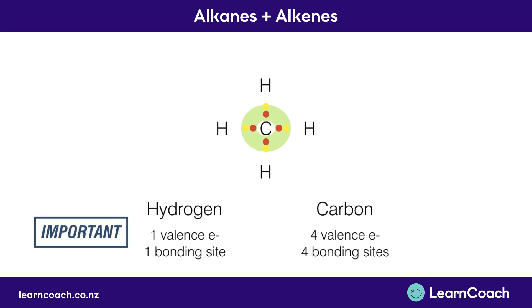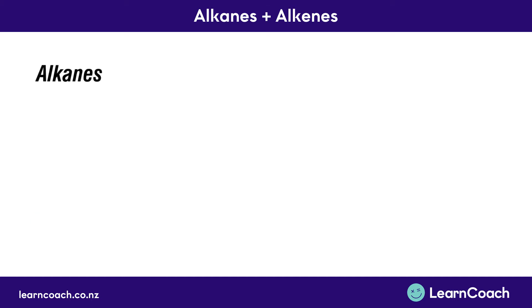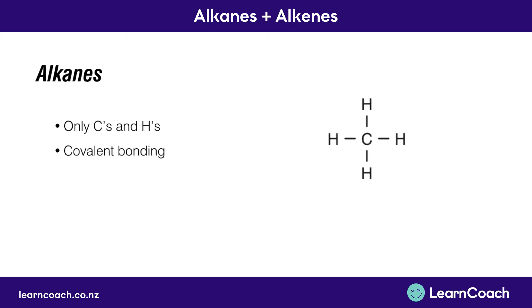This is important to know because exam questions will often ask you what this means and how to interpret it. Now we'll start looking at alkanes. Alkanes are structures which only have carbons and hydrogens. If this is our carbon, we know it's got four bonding sites, and each of these are going to be hydrogens. We already know that this is covalent bonding, which is also called electrostatic attraction.